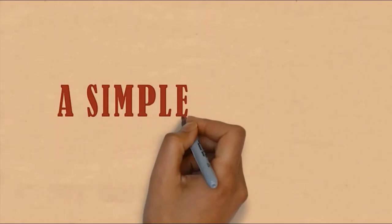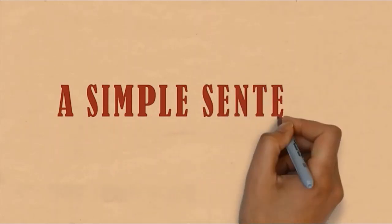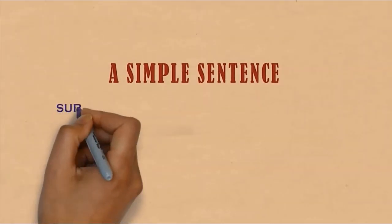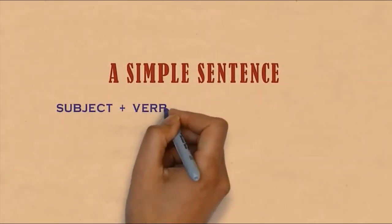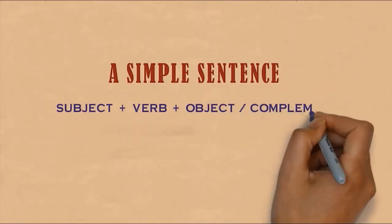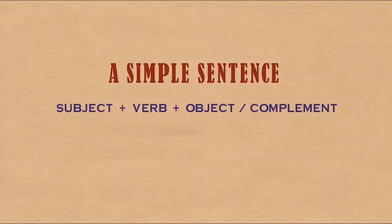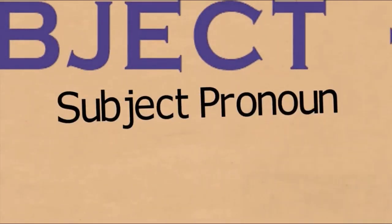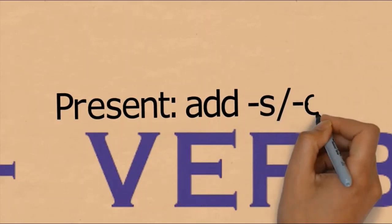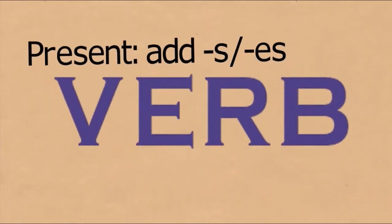Now we will learn how to make simple sentences. You don't need to make it too complicated. For simple sentences, there must be a subject and verb. You can also add an object or complement. What belongs to these elements? First, the subject must be in noun form or can be in subject pronoun form. The verb is as explained earlier - in present tense, add -s or -es if the subject is he, she, or it.